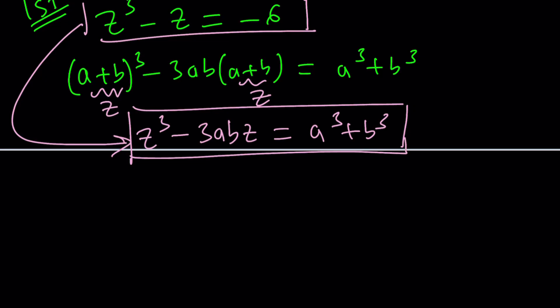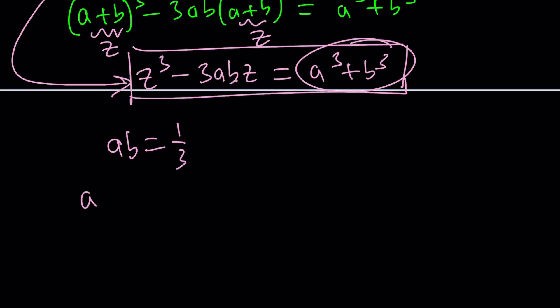The coefficient of z here is negative 3AB, and this is negative one. We can ignore the negatives and say that 3AB equals 1, or AB equals one third. That's one of my equations. The other one is the constant: A cubed plus B cubed equals negative 6.